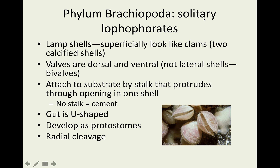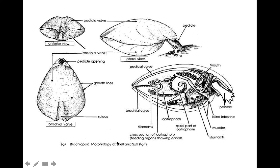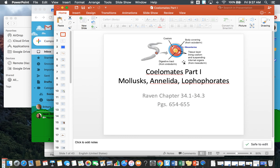Brachiopoda are our solitary lophophorates. Some examples are lamp shells — basically they look like two little clams with calcified shells. The valves are dorsal and ventral, not lateral like bivalves — so these are top and bottom, whereas bivalves are left and right. They attach to a substrate by a stalk; if they don't have a stalk, they'll be cemented to it. The gut is U-shaped. They are protostomes with radial cleavage. And that does it for Coelomates, Part 1.